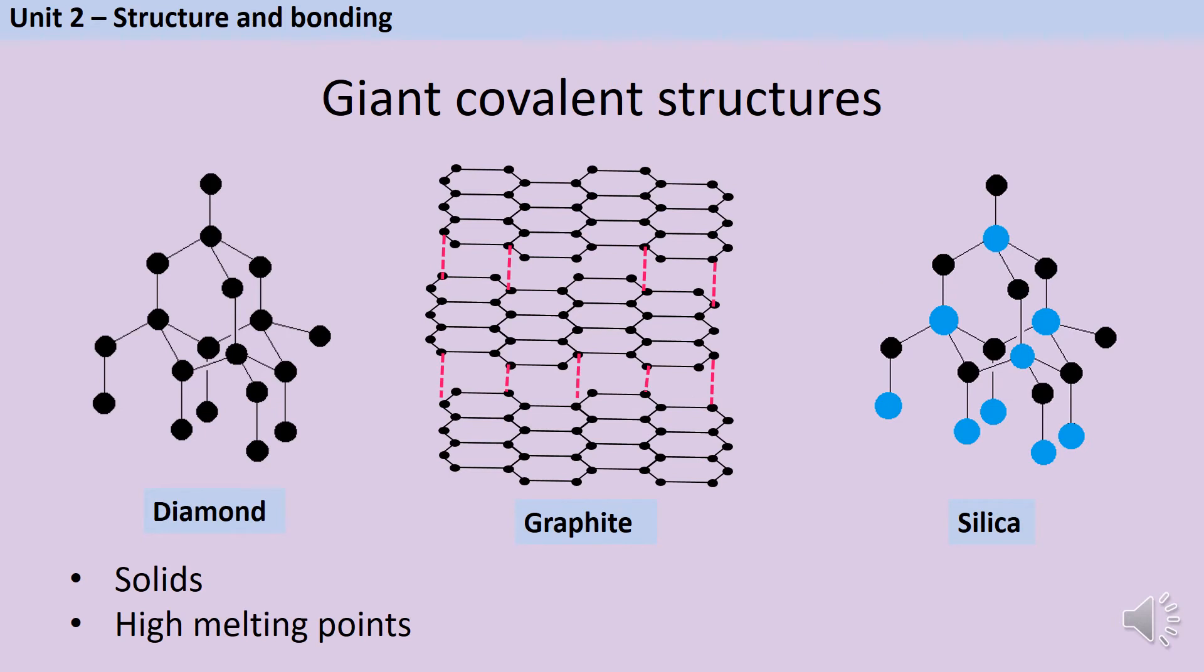When certain non-metallic elements bond, they can form giant covalent structures involving thousands of atoms. These structures, sometimes called macromolecules, include examples like diamond, graphite and silica, and they're characterised by being solids at room temperature with very high melting points.